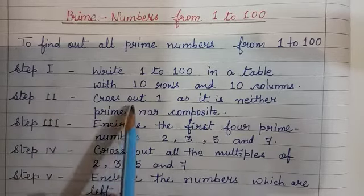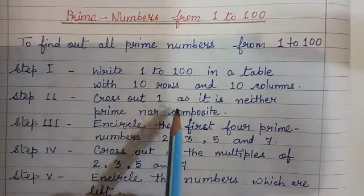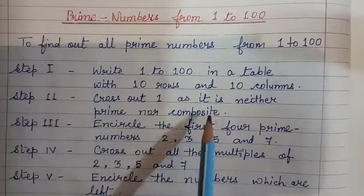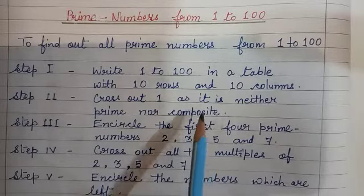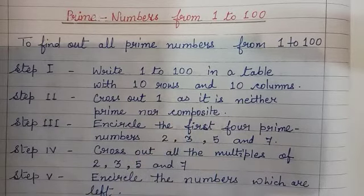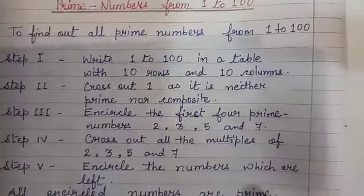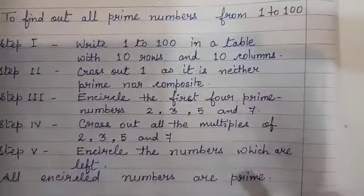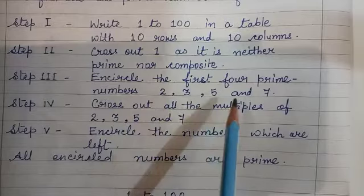Step 2: Cross out 1, as it is neither prime nor composite. Step 3: Encircle the first 4 prime numbers. The first 4 prime numbers should always be on your tips and on your lips. They are 2, 3, 5, and 7.